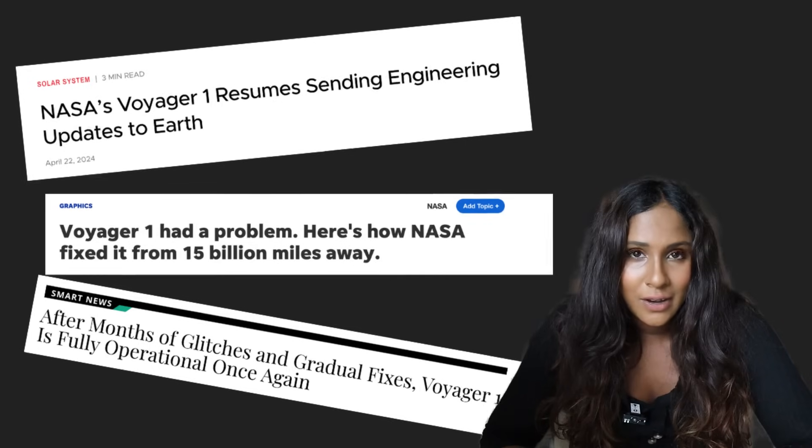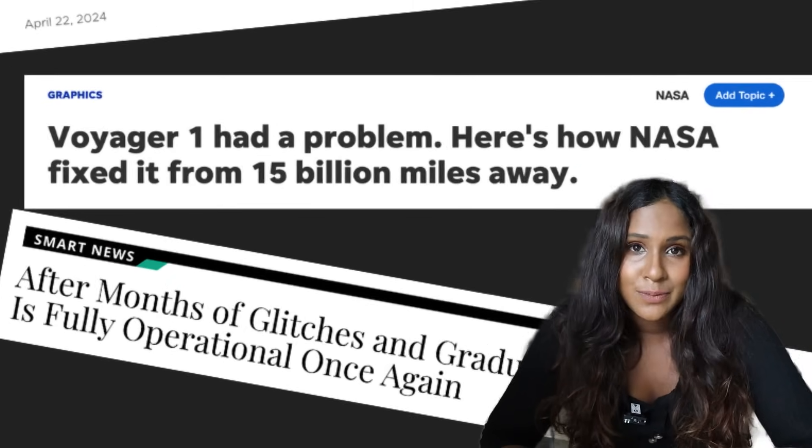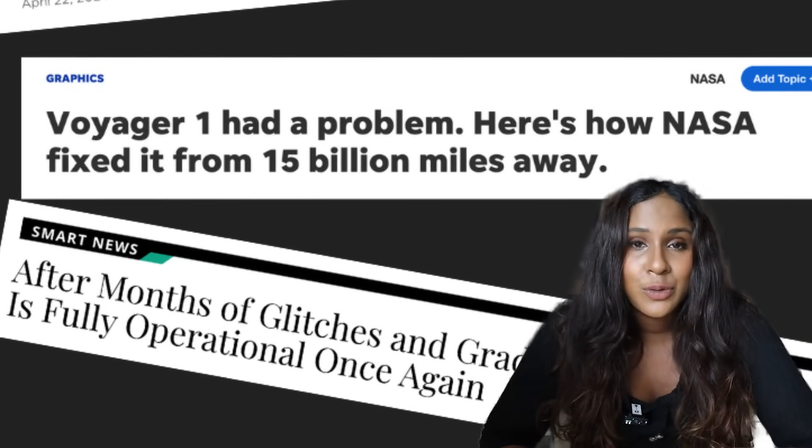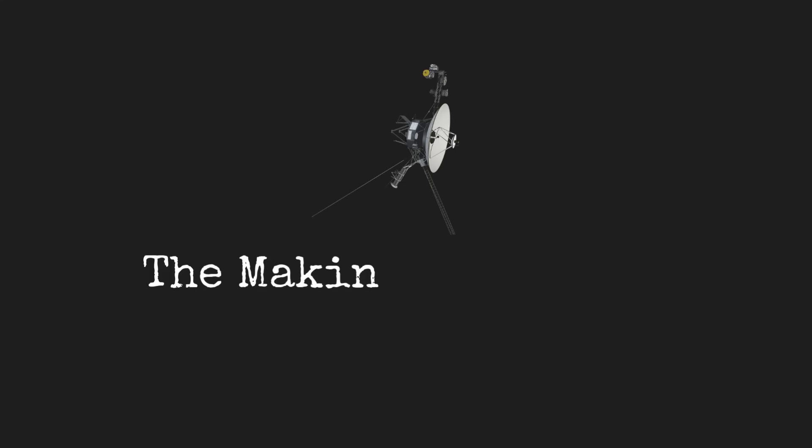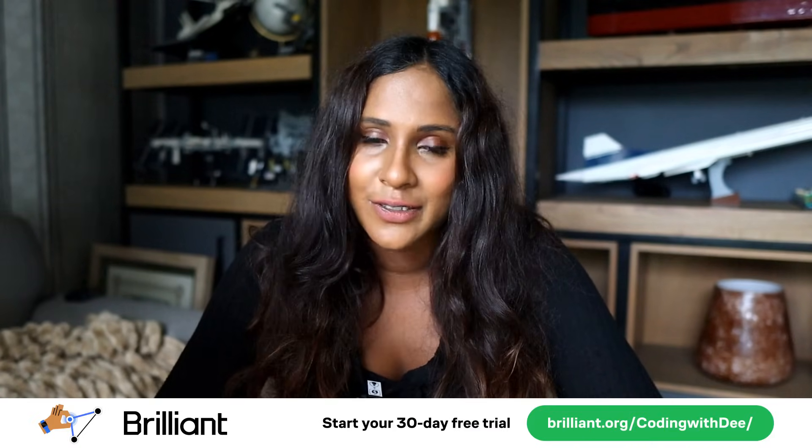using technology developed from the 70s, pulled off one of the most impressive software fixes in history. They fixed a bug on a spacecraft moving 38,000 miles per hour when it was 15 billion miles away. Thank you for today's sponsor, Brilliant. More information at the end of this video.